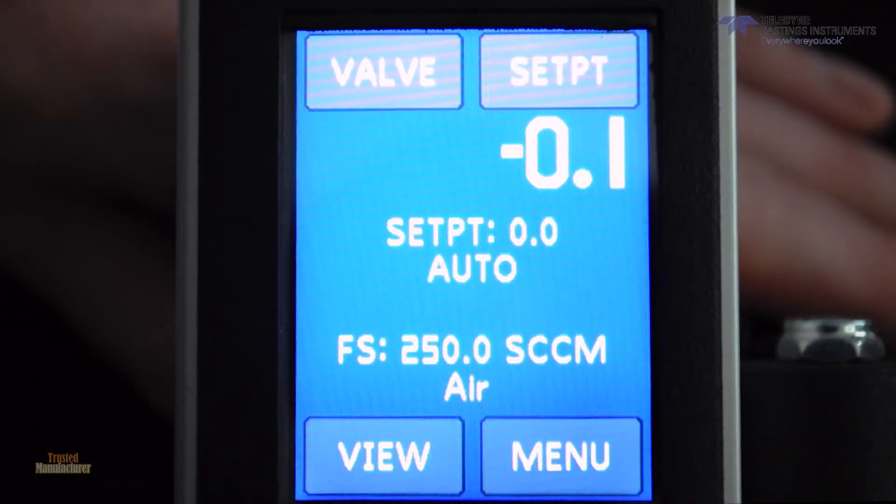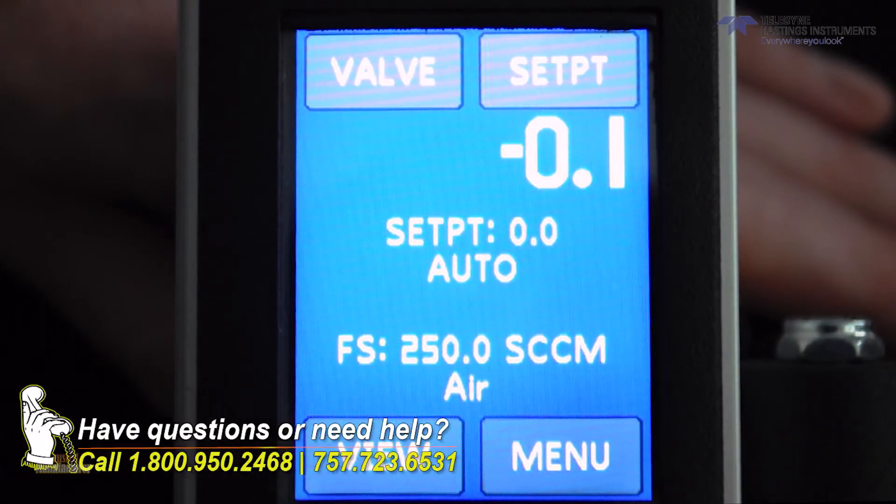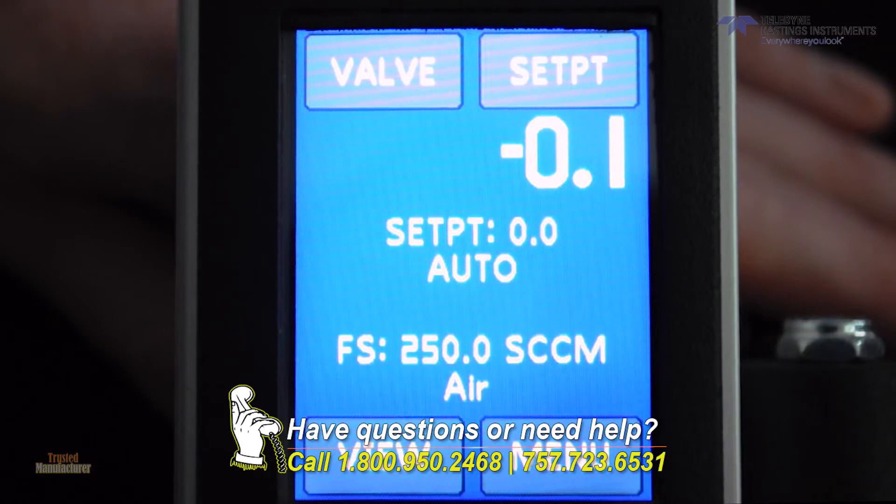The other thing I've got to do is select how I'm going to enter the command signal. Right now, the unit is set up in the digital command mode, which means that if I enter a command on the front panel, it'll respond, or if I send a command via RS-232, 485, or USB. I want to take it from the digital command mode into an analog command mode.